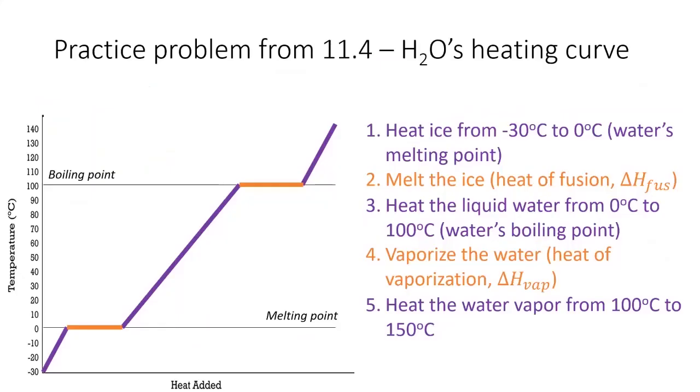Do you remember this practice problem from lesson 11.4? We had to calculate the energy involved as a very cold ice cube is heated up to very hot steam, going through two phase changes. Let's map this exact pathway on the phase diagram for water.